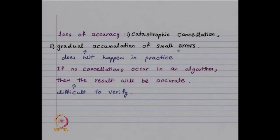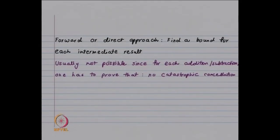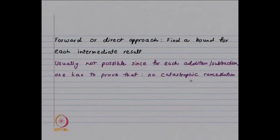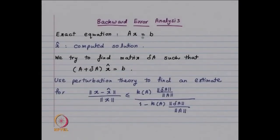If we can guarantee no catastrophic cancellation at each operation, we can say the error is acceptable. However, this is very difficult — keeping track of all the errors at every stage. The gradual accumulation of small round-off errors does not happen much in practice. In the forward or direct approach, one finds a bound for each intermediate result, but for each addition or subtraction one has to prove there is no catastrophic cancellation — this is not feasible in general.